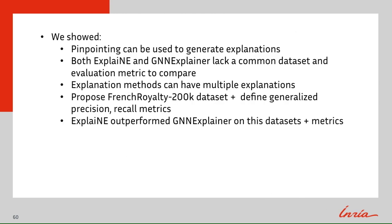In conclusion, we showed that pinpointing can be used to generate explanations. Both ExplaiNE and GNN Explainer lack a common dataset and evaluation metric to compare against. Furthermore, there can be multiple ways to explain why a link exists between two nodes, and any dataset used to benchmark these algorithms must include all possible explanations. We propose the French Royalty 200K dataset that includes all possible explanations, and adapt the generalized precision and recall metrics to be used with this dataset. Lastly, we found that ExplaiNE outperformed GNN Explainer on this dataset and performance metrics.